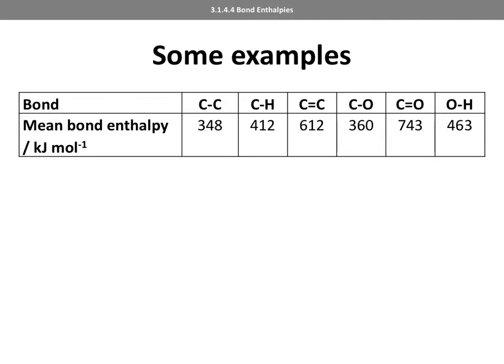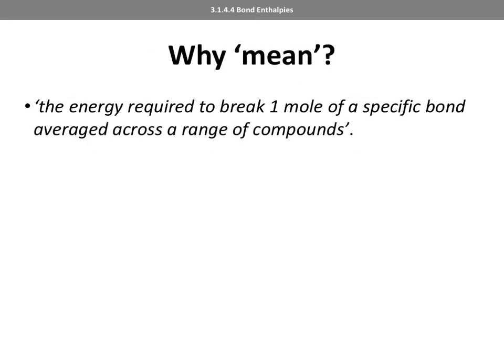The carbon-carbon double bond at 612 kJ/mol is much greater than the carbon-carbon single bond — it's a much stronger bond, which makes sense. The carbon-oxygen carbonyl bond also has a very high value. The strength of a bond is affected by the environment it's in, so the energy required to break a C-H bond in methane (CH₄) will be slightly different to that for the same bond in fluoromethane (CH₃F). The mean bond enthalpy is the energy required to break one mole of a specific bond, averaged across a range of compounds.